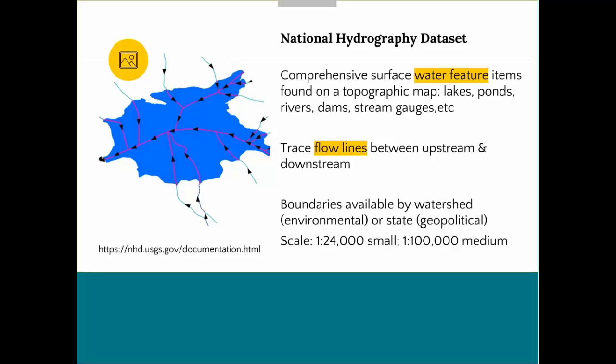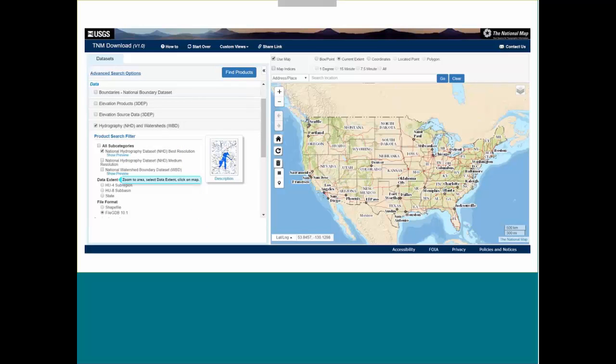It's a comprehensive surface water feature area for items on a topographic map — for example, lakes and ponds and dams and stream gauges. You can trace the flow lines of what's going on, and you can also look at the boundaries. The boundaries are not just for a state or country area, but environmentally focused — for example, a watershed. Here we are back at the National Map Viewer, and you can click on the left-hand side and zoom right into an area.